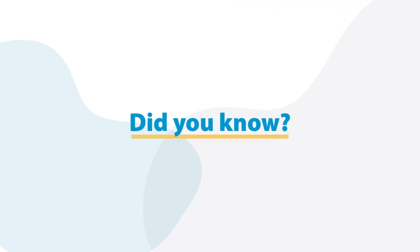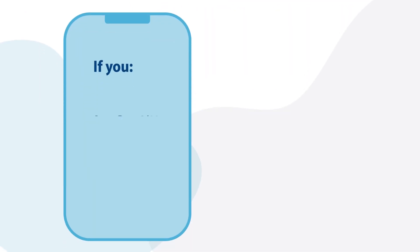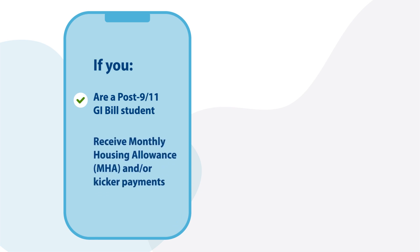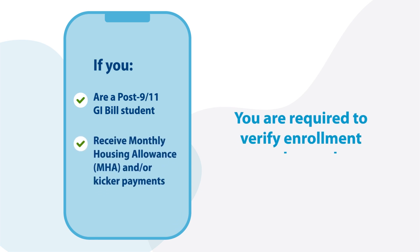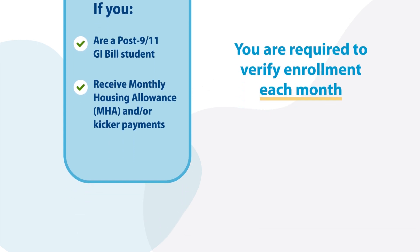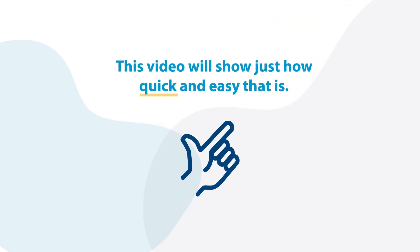Did you know? If you're a post-9/11 GI Bill student who receives monthly housing allowance and/or kicker payments, you are required to verify your enrollment each month. This video will show just how quick and easy that is.